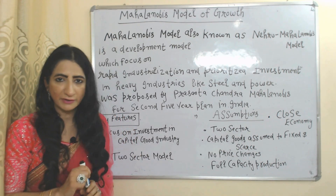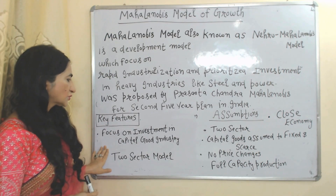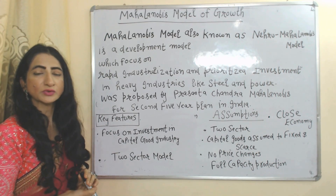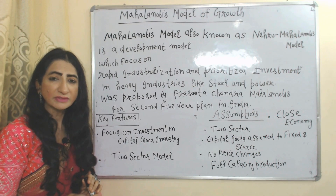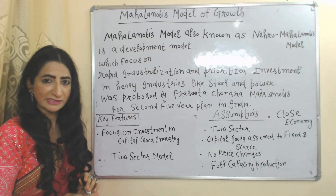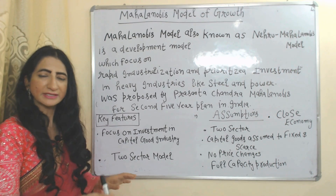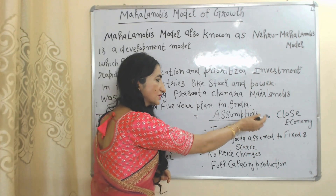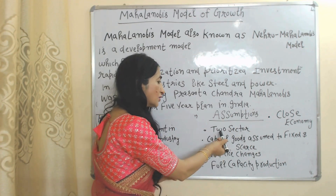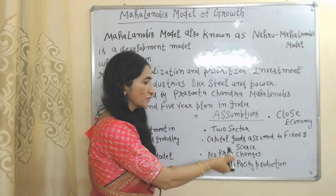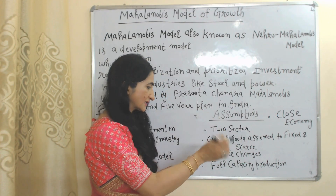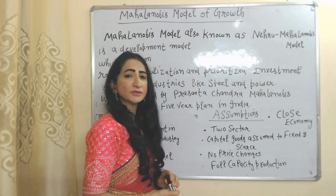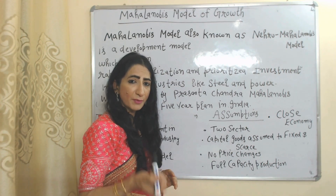This model was designed for the second five-year plan in India. Now we'll see its features. First, it focuses on investment in capital goods industry — machinery, tools, equipment, buildings, and infrastructure. It is a two-sector model: one is the capital goods sector and the other is the consumer goods sector. Assumptions include a closed economy with no international trade, and capital goods are fixed and scarce, prices are constant, and there is full capacity production — meaning we are producing the maximum possible output of both goods.